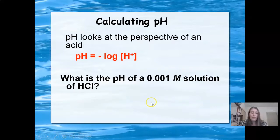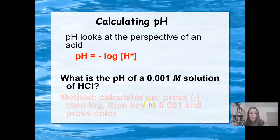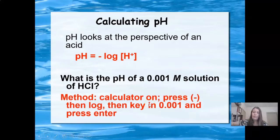If I'm doing it with a calculator, then it's pretty simple. I'm just going to turn the calculator on. I'm going to press wherever my minus key is that makes things negative. It's important that you do that. You're going to enter the log function, type in the molarity, and press enter.